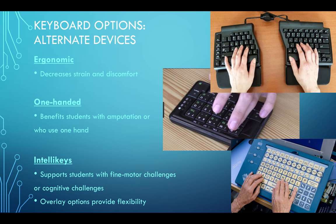Another alternative keyboard is IntelliKeys. IntelliKeys is a flat, touch-based keyboard. When one purchases IntelliKeys, the tool comes with multiple keyboard overlay options, including but not limited to QWERTY, alphabetical, and mathematics. The IntelliKeys keyboard can function as both a keyboard and a mouse. Additional features can be added to IntelliKeys, including key guards that help isolate separate keys and help guide one's fingers.